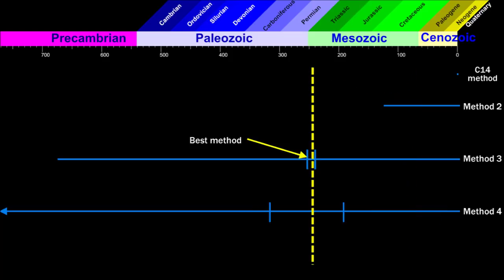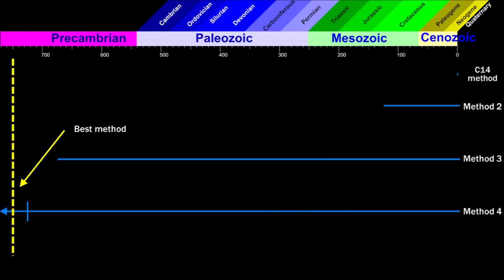When it is older, method 3 gives a better answer because method 2 is off scale. If it is even older, method 4 gives the best answer. Well at least, this is how it works in theory.